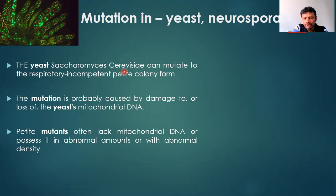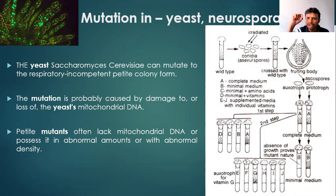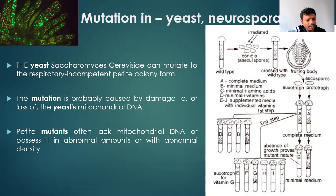As you would have observed in this diagram, in yeast there is the formation of spores, and these spores once they undergo meiosis will arrange one above the other in a linear order after meiosis in yeast or Neurospora. Because of this reason the scientist will have an option — the spores will be arranged one above the other after meiosis.